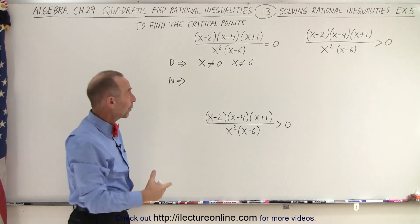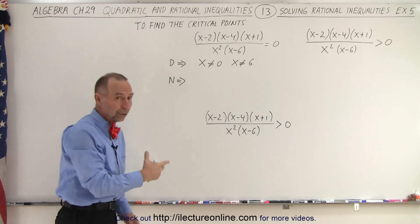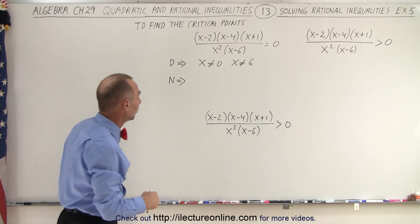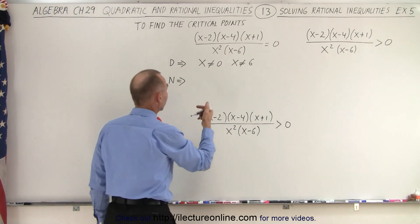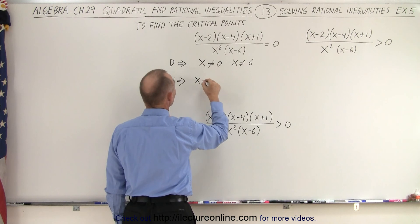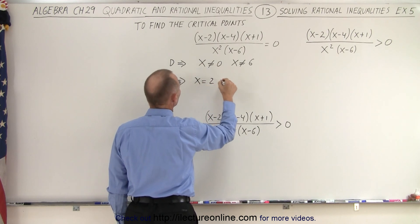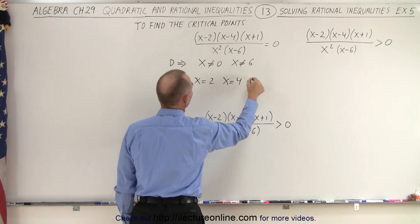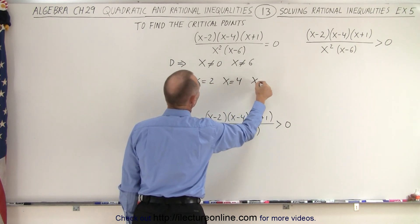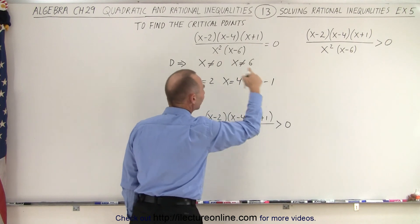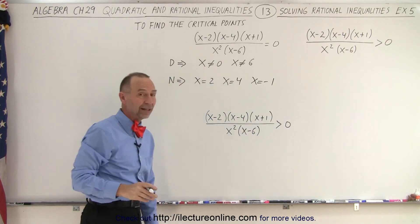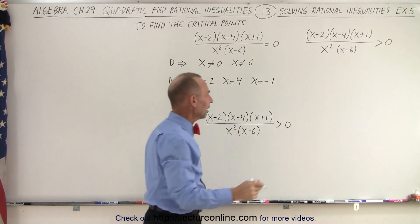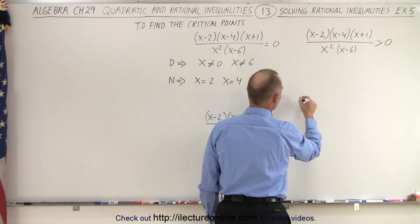Because when the numerator is zero, the whole fraction equals zero. So the three critical points from the numerator are x equals two, x equals four, and x equals negative one. In total, we have five critical points to place on the number line, so let's go ahead and do that.